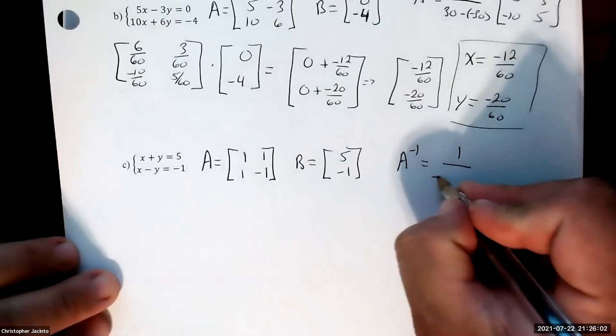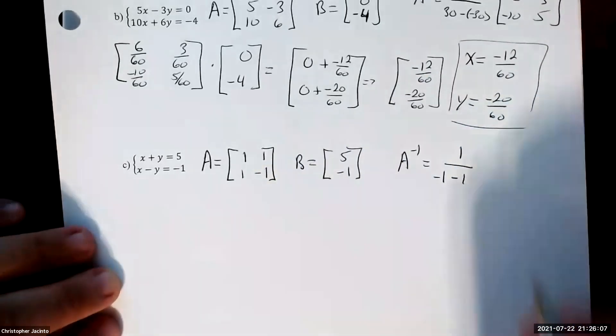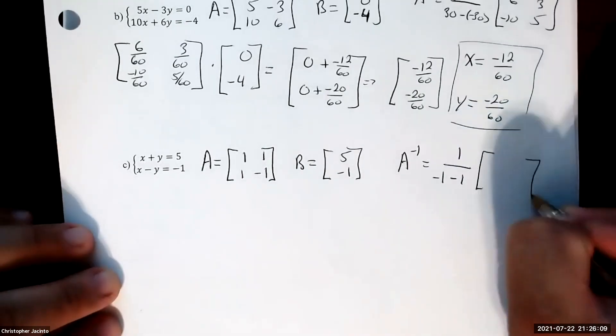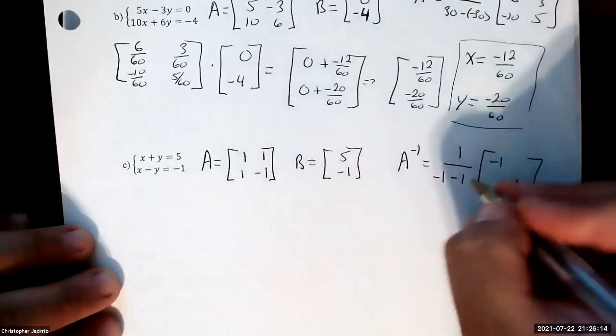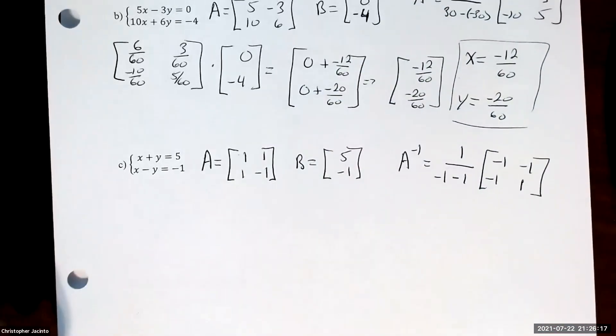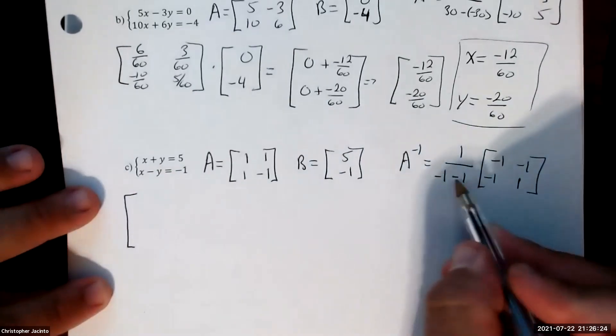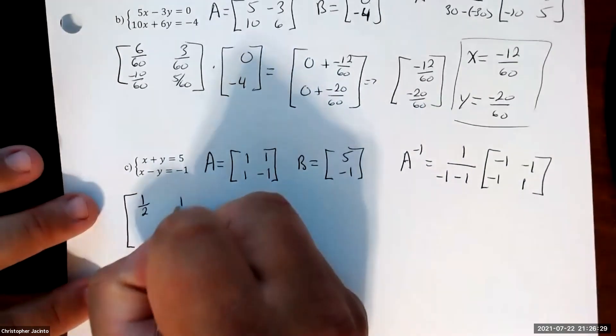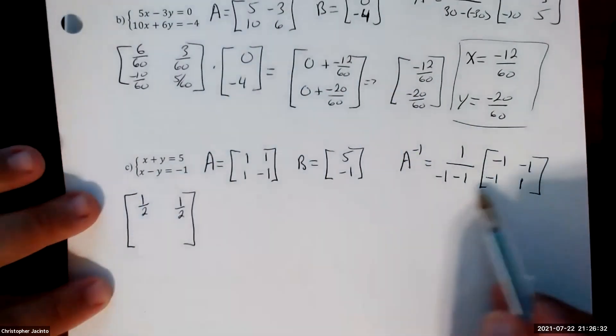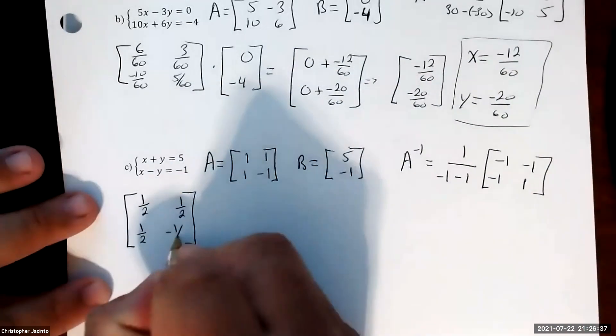So 1 times negative 1 is just negative 1 minus 1 times 1 is just 1, so that's negative 2. Flip these around and swap the signs, so lots of 1s everywhere. We're going to have positive 1 half, positive 1 half, another positive 1 half, and then finally negative 1 half. Alright, cool.